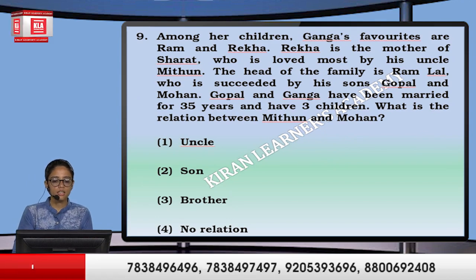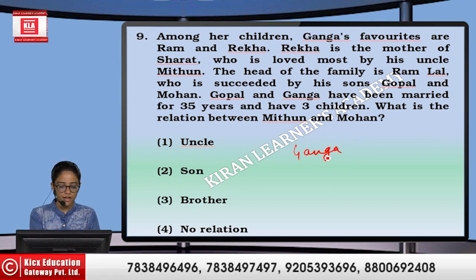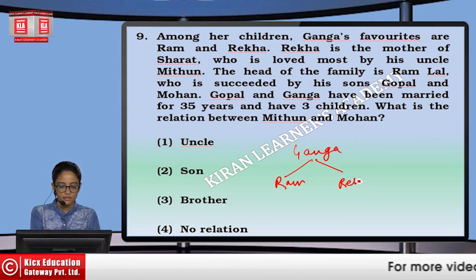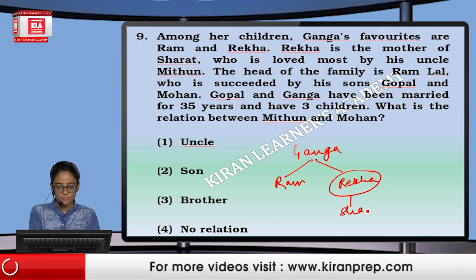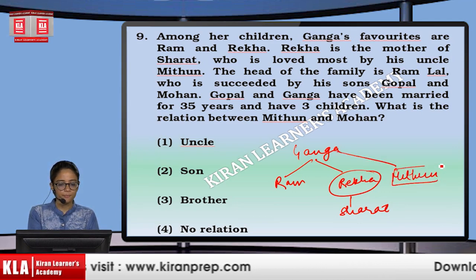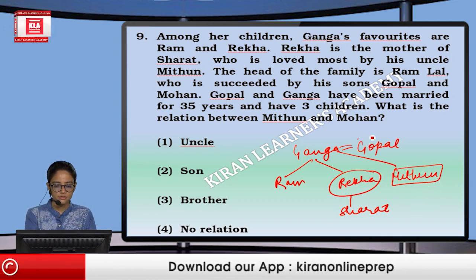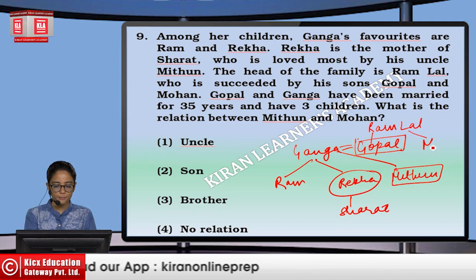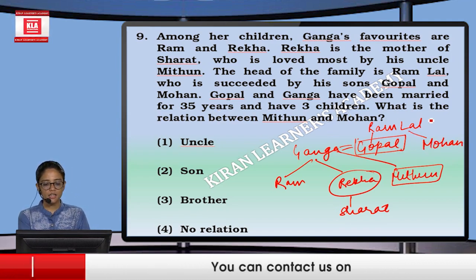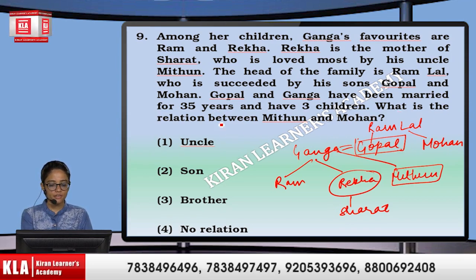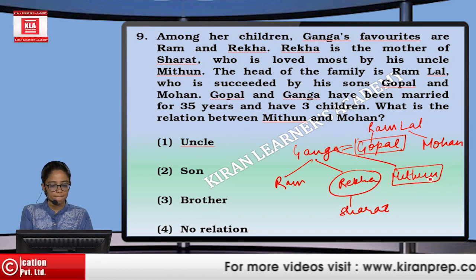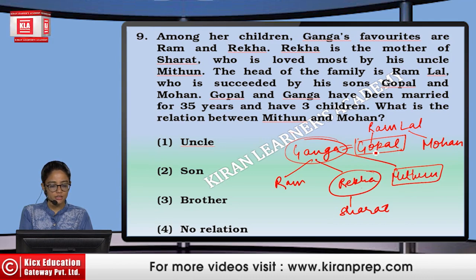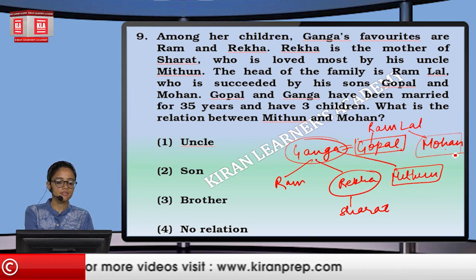Next: among her children, Ganga's favorites are Ram and Rekha. Rekha is mother of Sharath, who is most loved by his uncle Mithun — that means mother's brother. The head of the family is Ramlal, who is succeeded by his sons Gopal and Mohan. Gopal and Ganga have been married for 35 years and have 3 children. What is the relation of Mithun and Mohan? For Gopal, Mohan is like father's brother, which is uncle. That means first option.